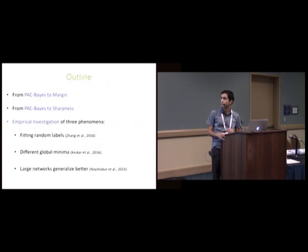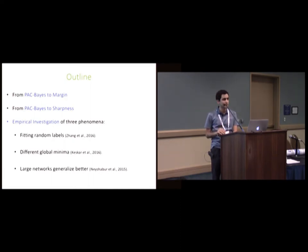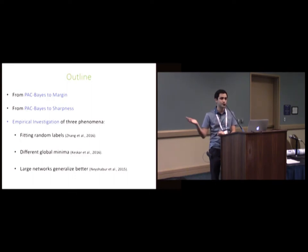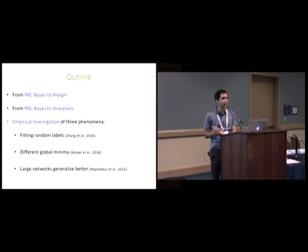In this talk I'm going to discuss connections to margin, get some margin bounds using PAC-Bayes, and then discuss connections to sharpness. At the end I'm going to look at three empirical observations in deep learning. One is that we can fit random labels by doing SGD on deep networks, and the same algorithm can also generalize on true data. Another is that different optimization algorithms end up at different global optima with different generalization properties. The last one is that larger networks generalize better in some settings without any regularization.